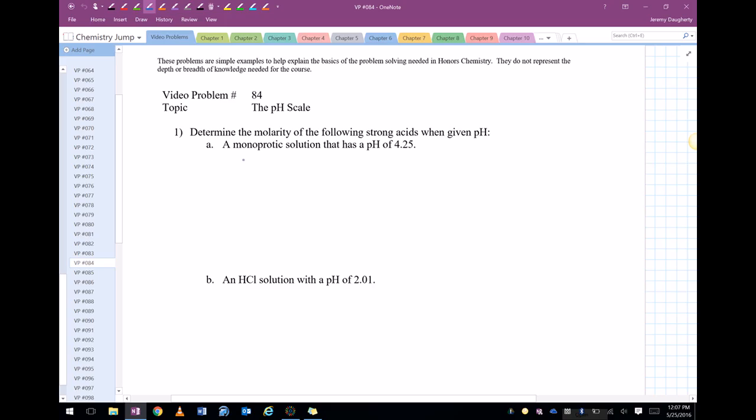So the equation we're going to be using here - a monoprotic solution has a pH of 4.25, determine the molarity. So what we want to know is the concentration of hydrogen ion. We're going to take 10 to the negative pH in order to do this.